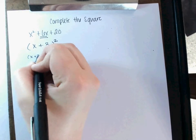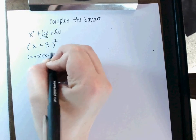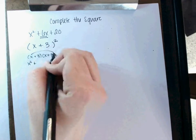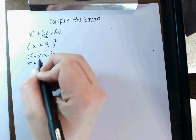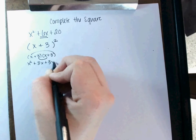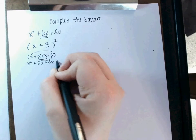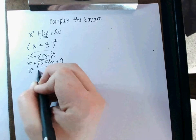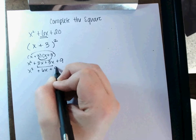x plus 3 times x plus 3. So I have x times x, then my outside is 3x. My inside is 3x, and my 3 times 3 is plus 9, which means that I have x² plus 6x plus 9.